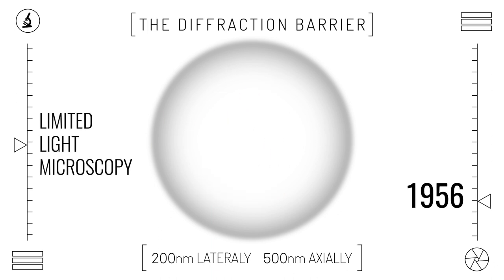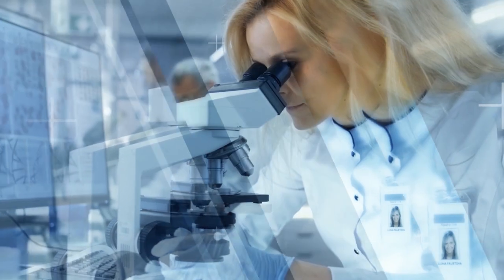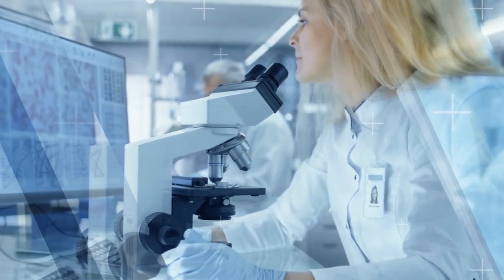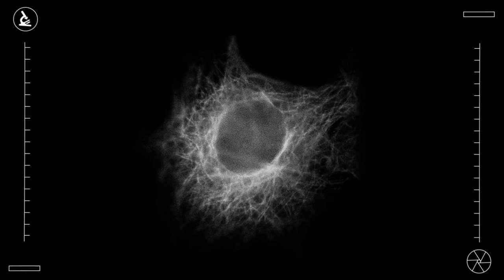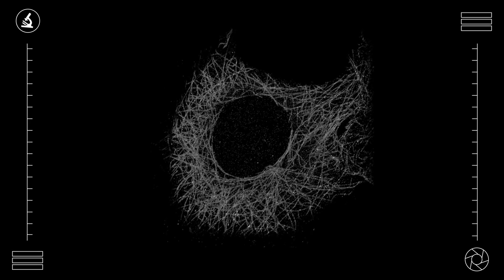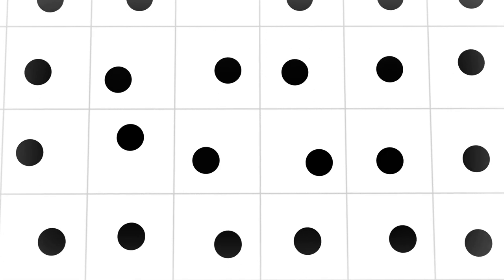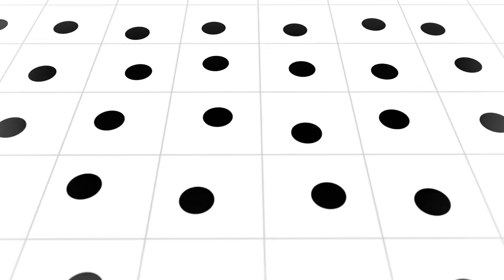This radically changed when super-resolution imaging broke the diffraction barrier. This grand achievement enabled us to see nanostructures for the first time. However, the technology came with new limitations. Unable to capture depth information, super-resolution images were limited to only two dimensions.